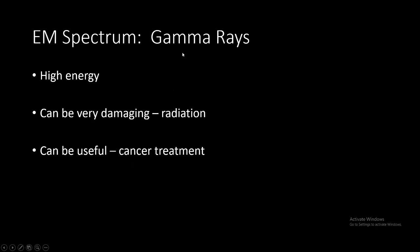Last on the electromagnetic spectrum are gamma rays, the most dangerous type of wave. They have the shortest wavelength, the highest frequency, and carry the most amount of energy. They can be very damaging, but they're also useful for cancer treatment — concentrated on specific cancer cells — though they tend to weaken surrounding cells during treatment. These waves are the most dangerous due to the enormous amount of energy they carry.